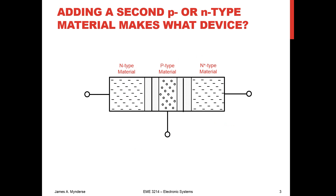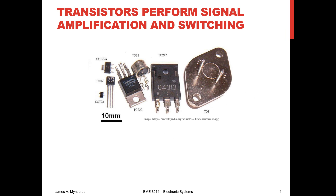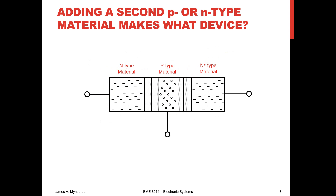What happens if we stick on another N-type or P-type material? In this case, I've taken my P-N on the right and stuck an extra N on the left. That's a transistor. It's going to have typically an N-type, a P-type, and an N-type, where that second N on the right is N-plus — a stronger doping, more parts per million. You can also do a P-N-P, and those are our two different types of transistors in a BJT sense: N-P-N and P-N-P.